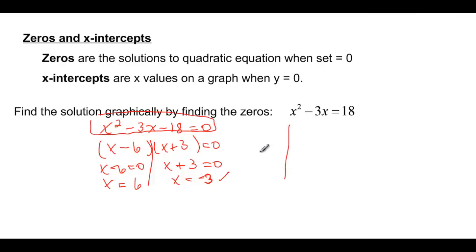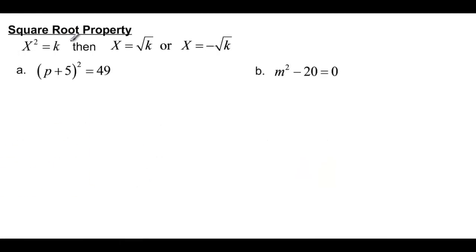So if we had drawn our graph, we would have had it at negative 3 and 6, and our graph looks something like this, and that would be our graph solution. Square root property is another way that we can solve it, so you have x squared or something squared is going to be equal to a constant.